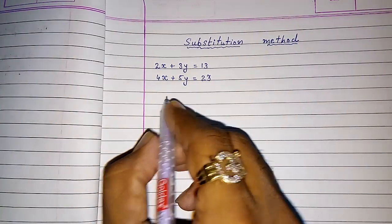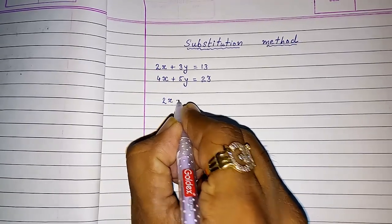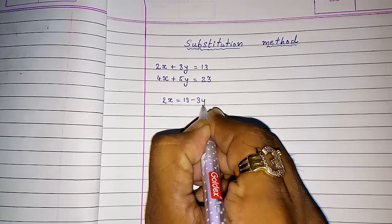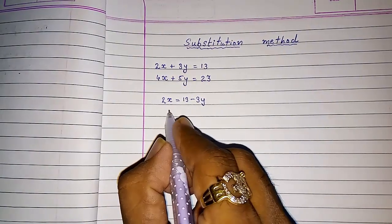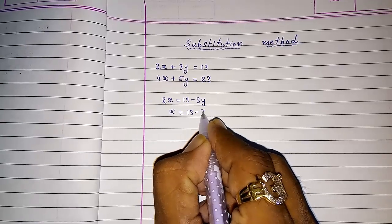First, we are going to select 2x = 13 - 3y. Move 3y to that side, and then x = (13 - 3y) / 2.